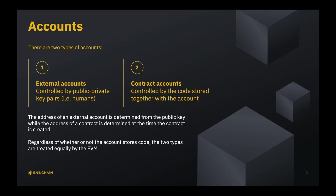The first topic is accounts. Accounts are basic components and modules in the EVM for controlling. Every operation, transaction, calling — anything happens under the control of a certain account. There are two types of accounts: external accounts, which are controlled by public-private key pairs, or contract accounts, controlled by the code stored together within the account. External accounts are basically like any person's account inside the BNB chain — could be you, me, anybody. Contract accounts store the code of a smart contract, and this is where smart contracts live.